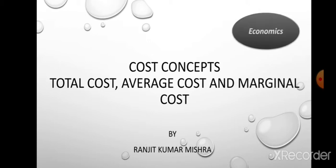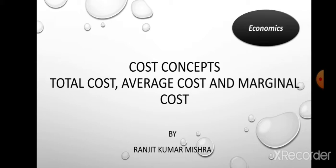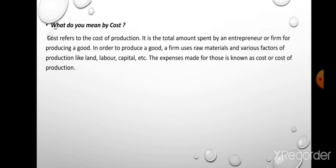What is cost? Cost refers to the cost of production. It is the total amount spent by an entrepreneur or firm for producing a good. Total expenditure incurred on producing a good is known as cost. In order to produce a good, a firm has to use raw materials, various factors of production like land, labor, capital, etc., and other things like transport facilities, power, fuel, and many other things in the production process. The expenses made for this are known as cost or cost of production.